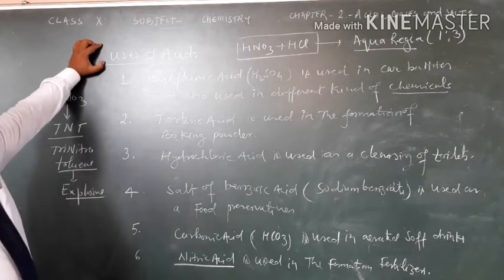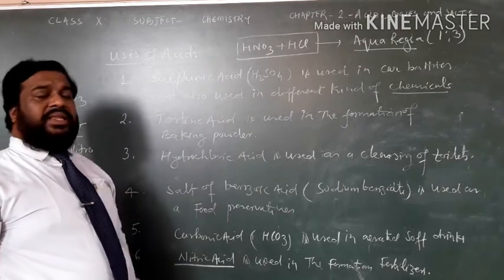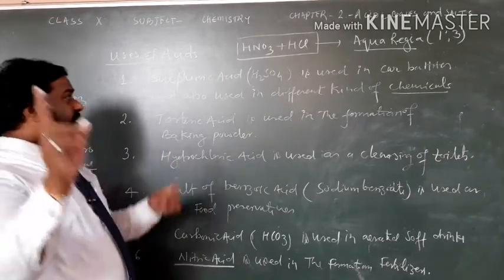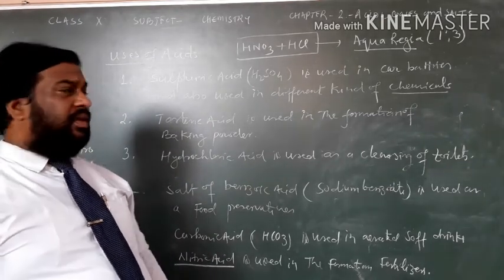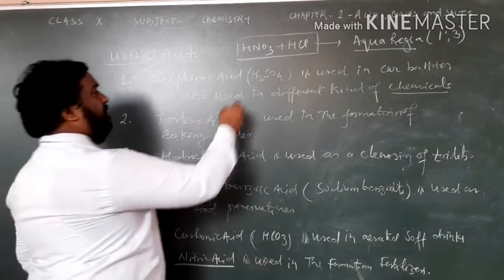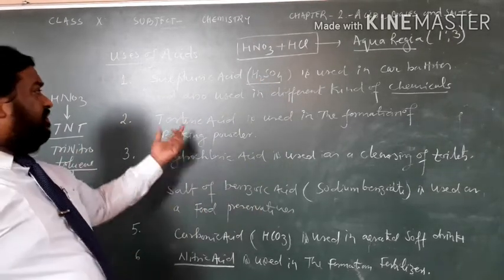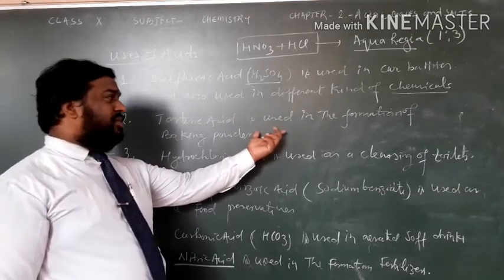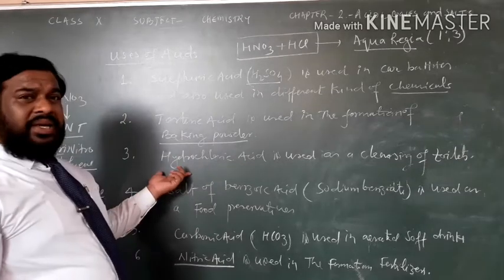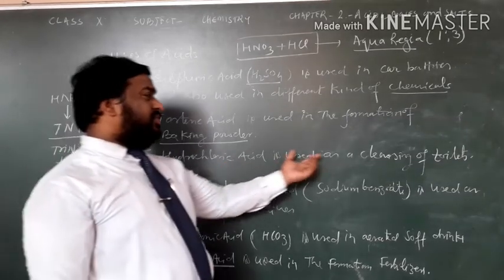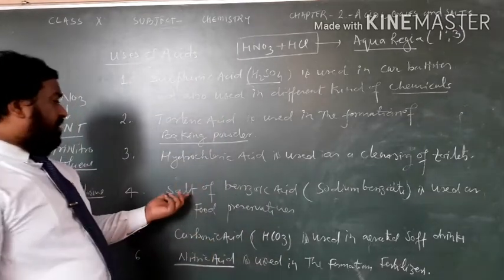To summarize, Sulphuric Acid is used in car batteries and in different types of chemicals formation. That is why Sulphuric Acid is also known as king of chemicals. Tartaric Acid is used in the formation of baking powder. Hydrochloric Acid is used as a cleansing agent in toilets.